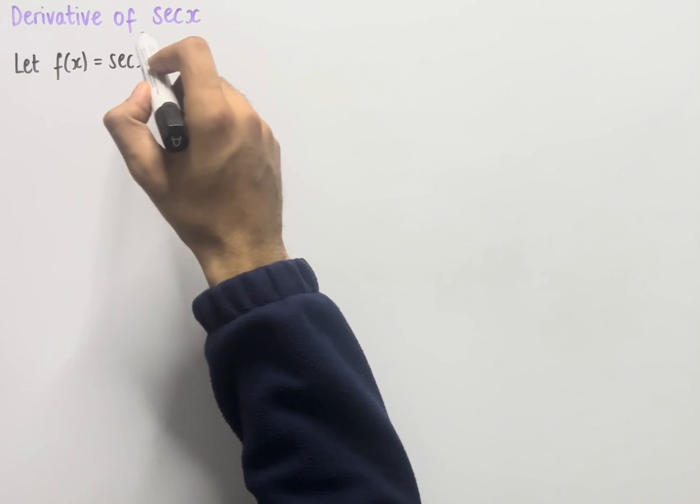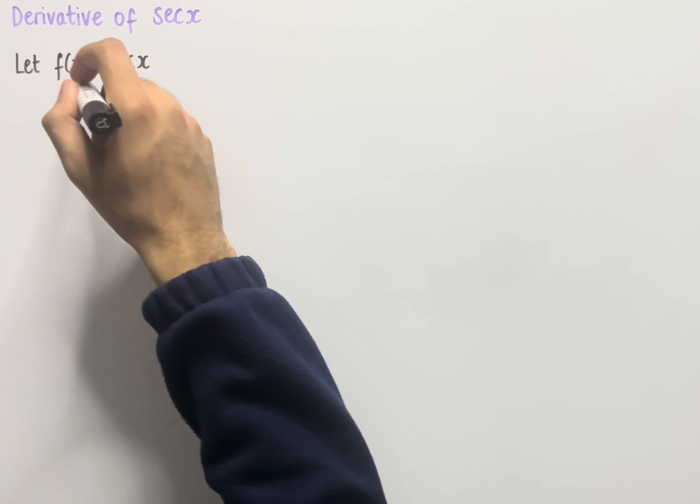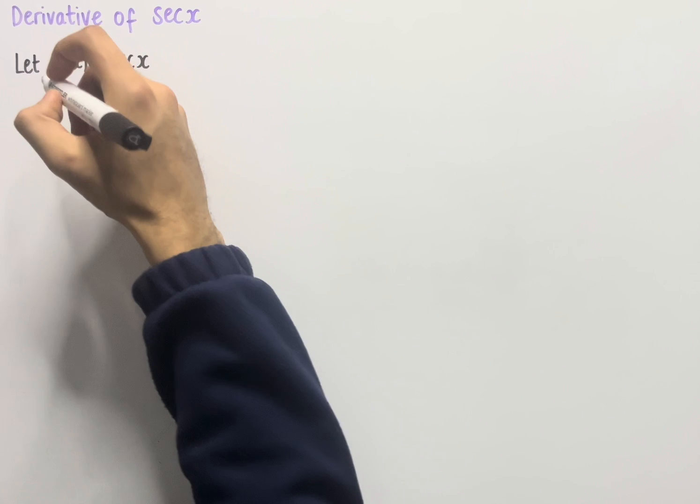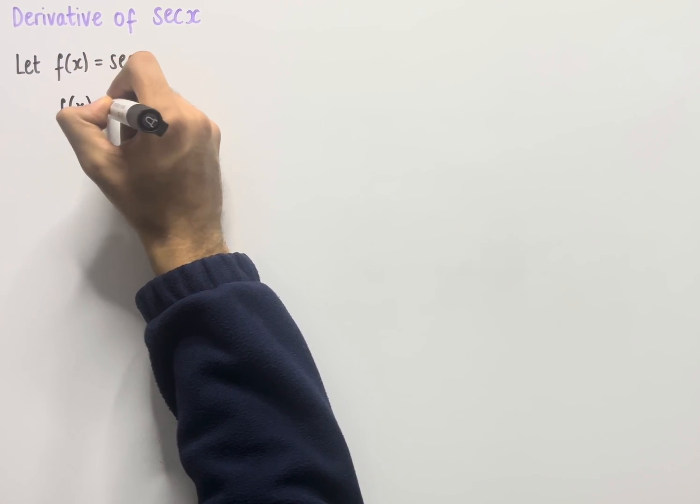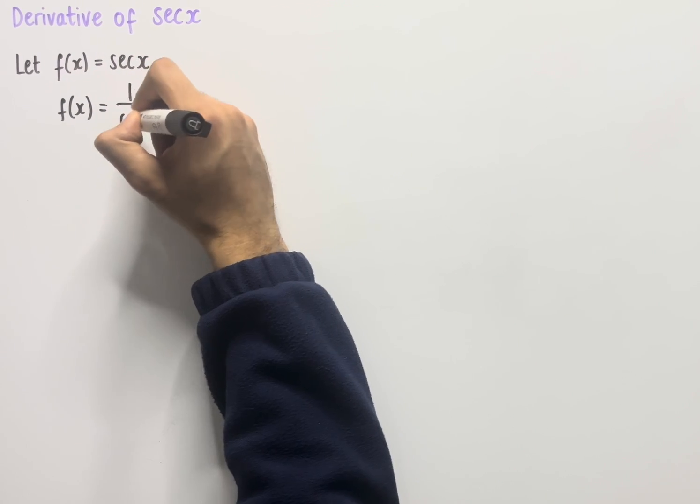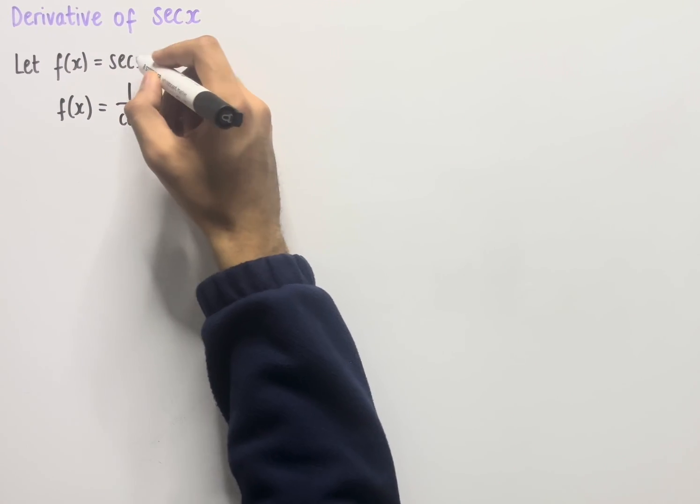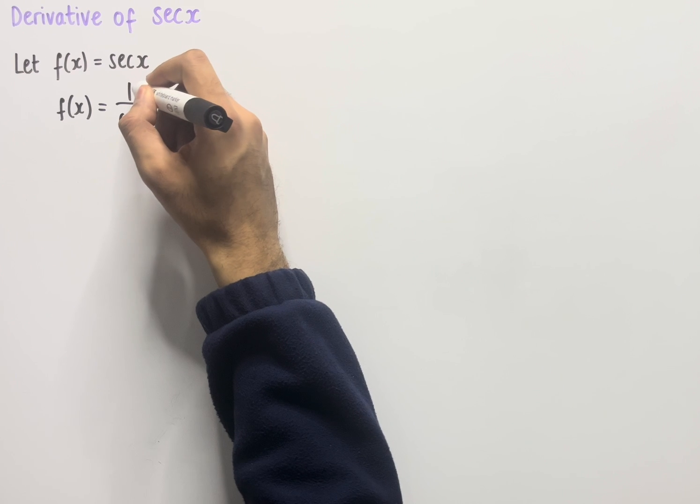Let's look at the derivative of sec x. If we let f(x) equal sec x, then we can rewrite this as f(x) which equals 1 over cos x, because the definition of sec x is that it's equal to 1 over cos x.